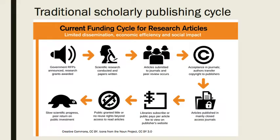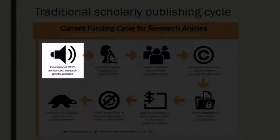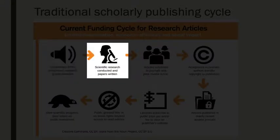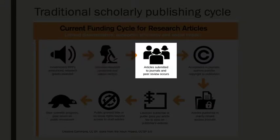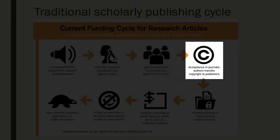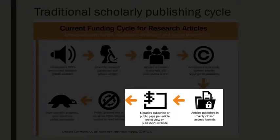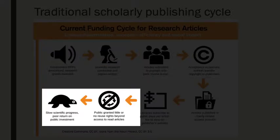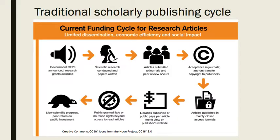Here is an overview of the traditional publishing cycle. Typically, it is the government or large foundations that announce the need for research on a topic. Researchers at universities answer the call by conducting the research, writing the paper, and submitting it for peer review. Once it is accepted by the publisher, the author transfers her copyright to the publisher and does not get paid for the work she has done. Once published, libraries pay for the articles via subscriptions, and the only people who have access to it are the students, faculty, and staff affiliated with the school. The public is granted no reuse rights, and it is difficult to get the research into the hands of those that may need it.